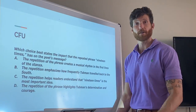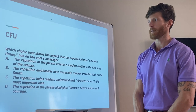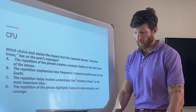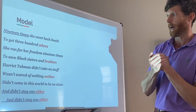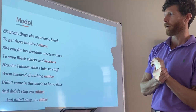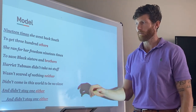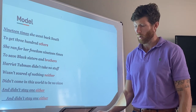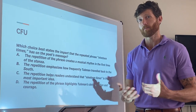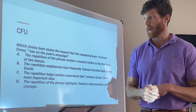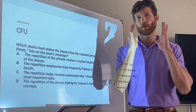This brings us to our check for understanding, or CFU. Which choice best states the impact that the repeated phrase 'nineteen times' has on the poet's message? Going back into the poem: 'Nineteen times she went back south to get three hundred others. She ran for her freedom nineteen times to save black sisters and brothers.' Why do you think the author wants you to focus on that phrase 'nineteen times'? Why is it integral to the message they're trying to create with this poem? Pause the video right now, answer this CFU, and when you come back on I'm going to share the answer.